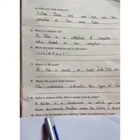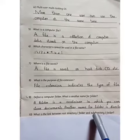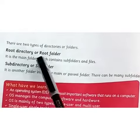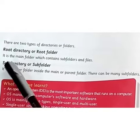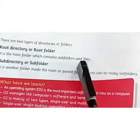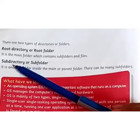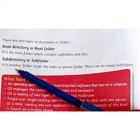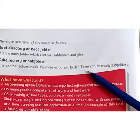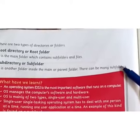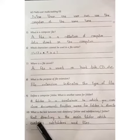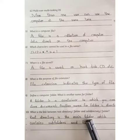Our next question is: what is the link between root directory folder and subdirectory folder? Students, root directory or root folder is a main folder which contains subfolders and files. While subdirectory or subfolders is another folder inside the main or parent folder. There can be many subfolders. So the answer is: root directory is a main folder which contains subfolders and files.